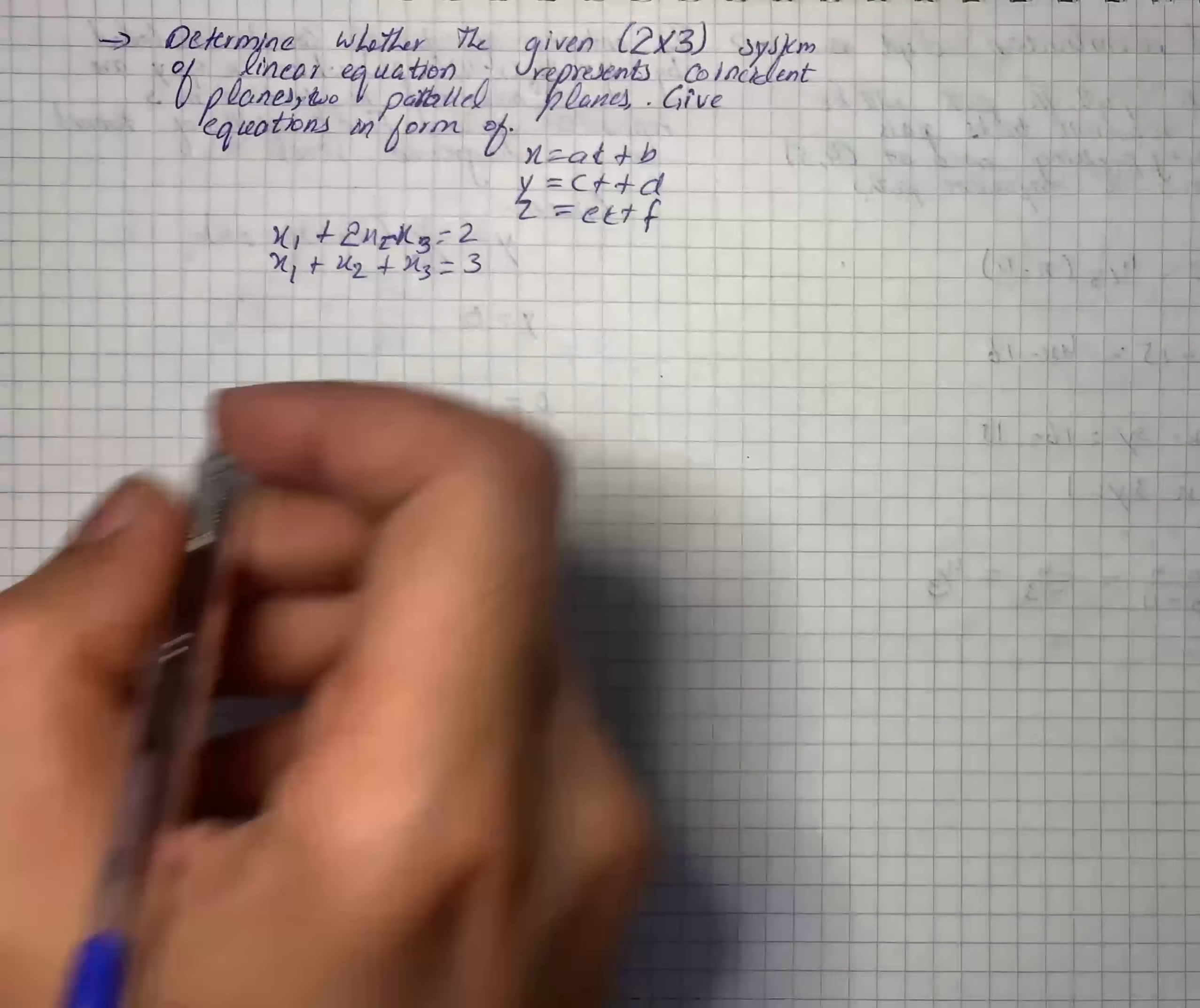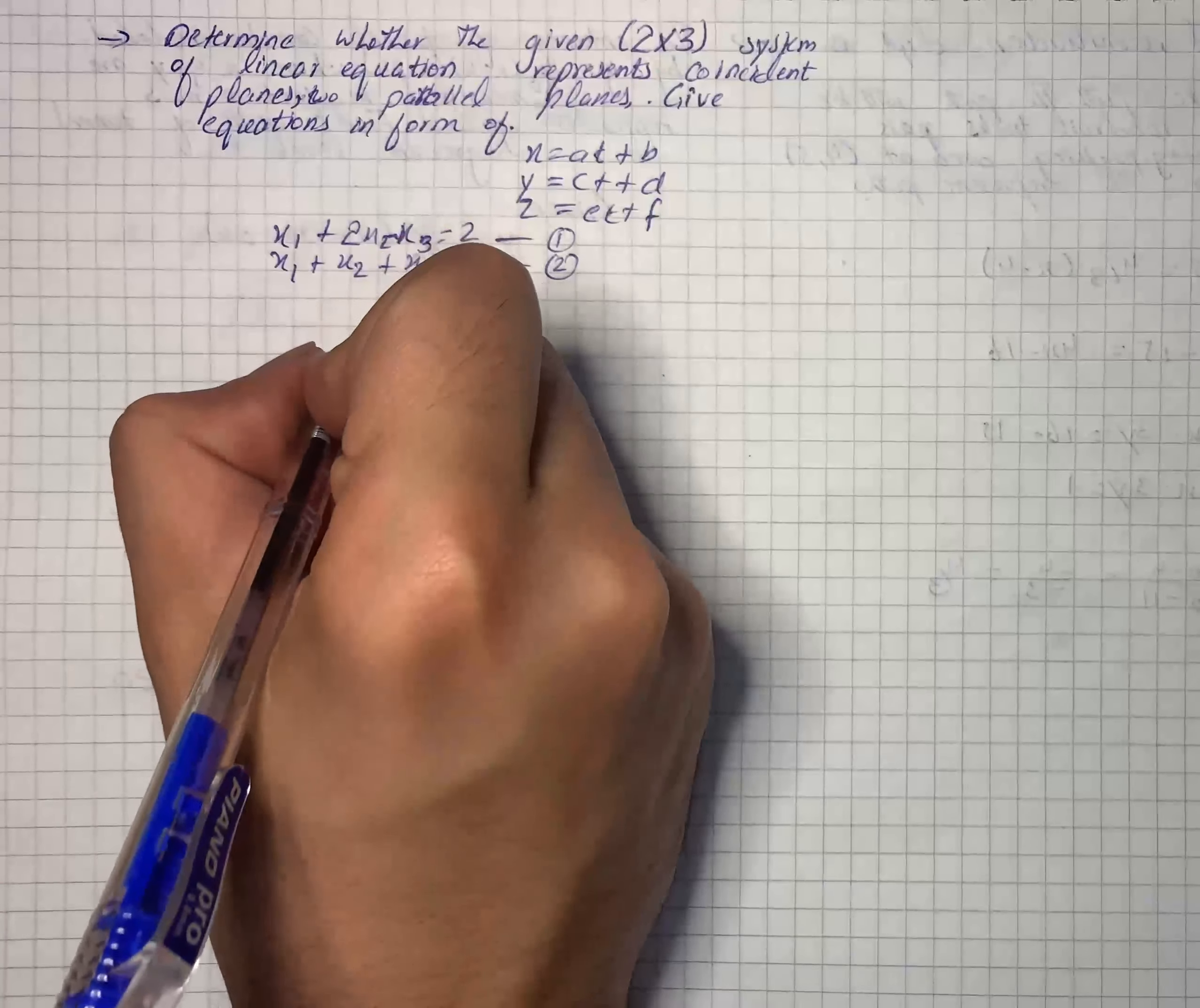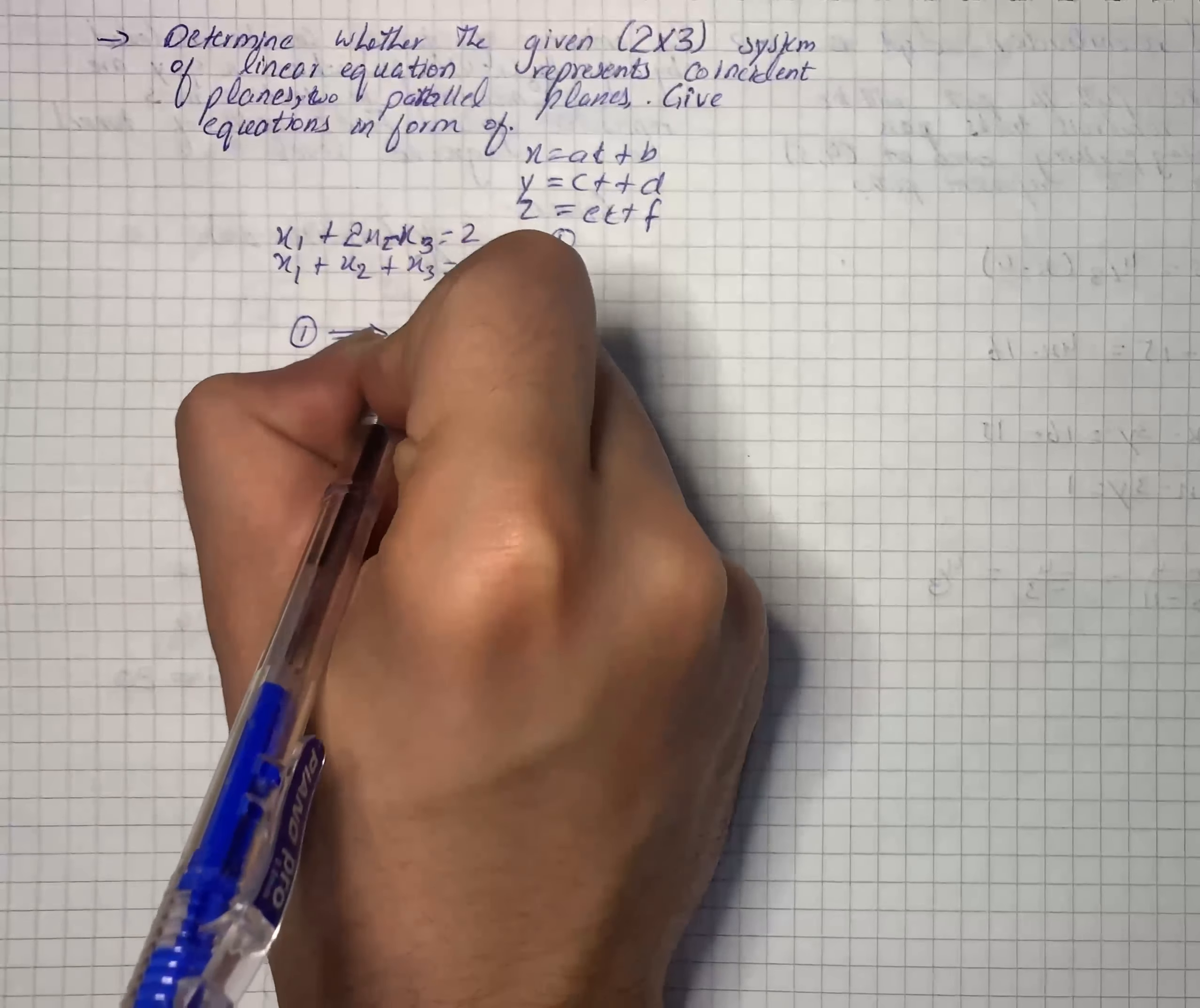So first of all, we write our equations and let them be equation number 1 and equation number 2. From equation 1, we have x₁ = 2 - 2x₂ + x₃.